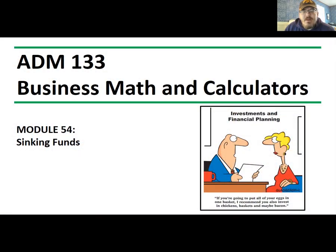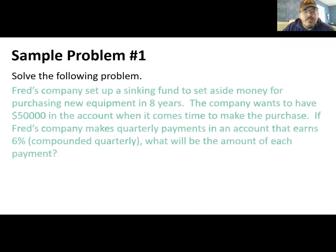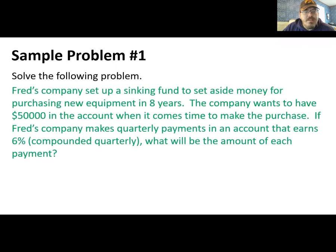All right, so let's chat about sinking funds. In this first example, here's what we've got. Fred's company set up a sinking fund to set aside money for purchasing new equipment in eight years. The company wants to have $50,000 in the account when it comes time to make the purchase. If Fred's company makes quarterly payments in an account that earns 6% compounded quarterly, what will be the amount of each payment?